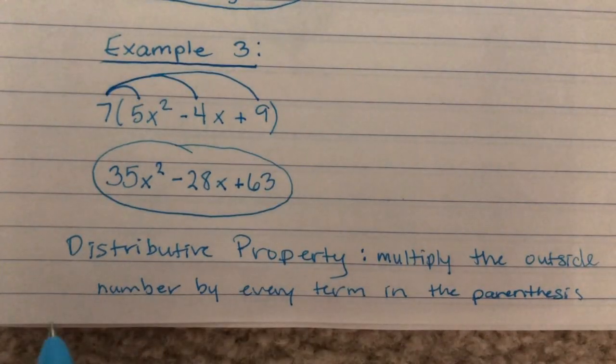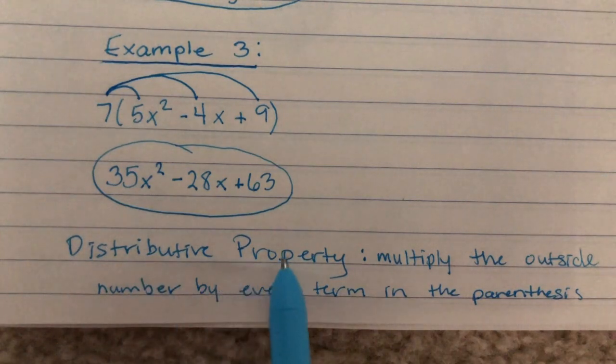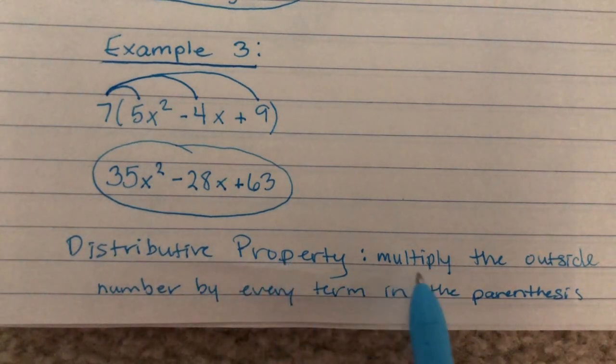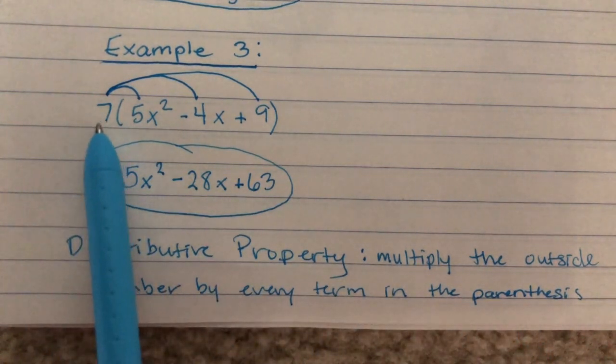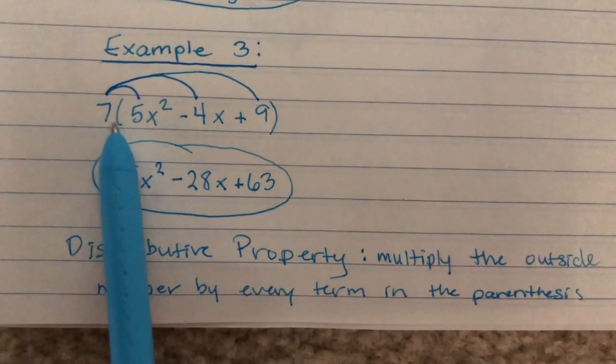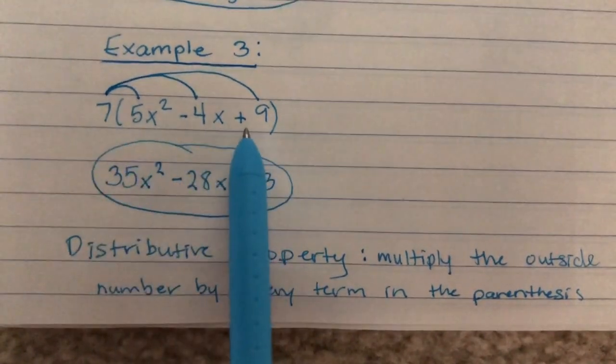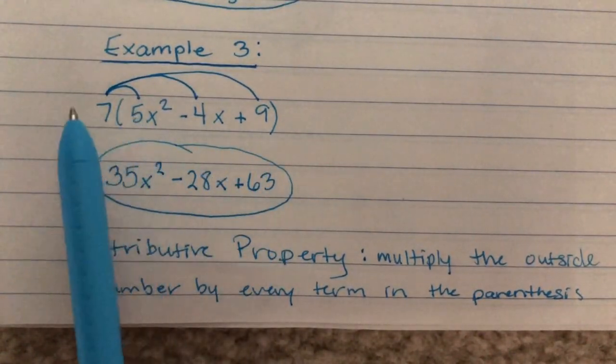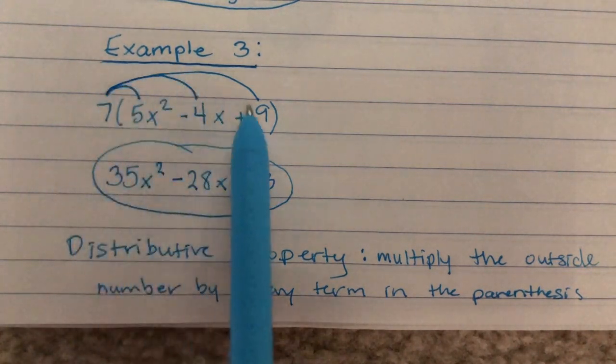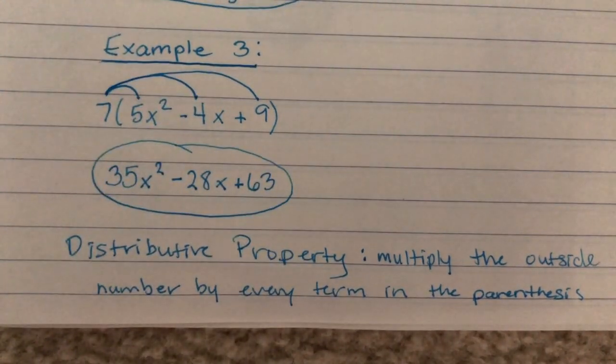So, to review for today, we learned how to use the distributive property, which says that we're going to multiply the outside number by every term in the parentheses. This means when I see one number and then a set of parentheses that has multiple terms inside of it, I can multiply that outside number by the coefficients of each term to simplify the expression.